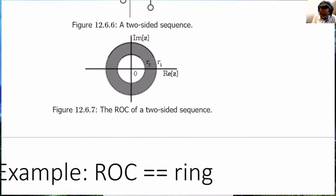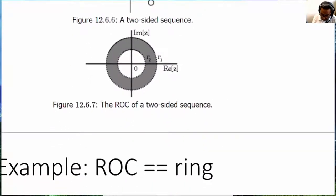Now, what is an annular ring? It looks like this. This is the Z plane and the region of convergence is only between two circles. It looks like a ring.